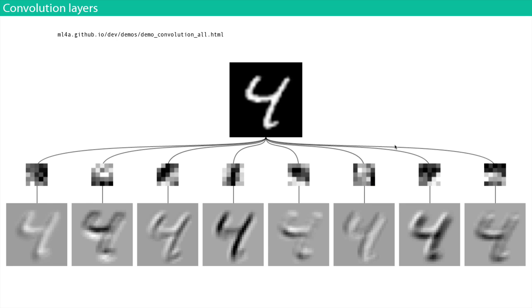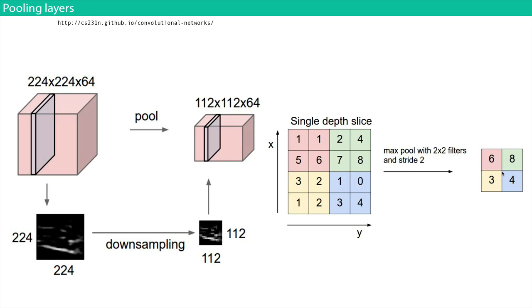At every convolutional layer you'll have a variety of these filters — they all look different and produce different responses. The other kind of layer is a pooling layer, which is much simpler — it's a downsampling operation.